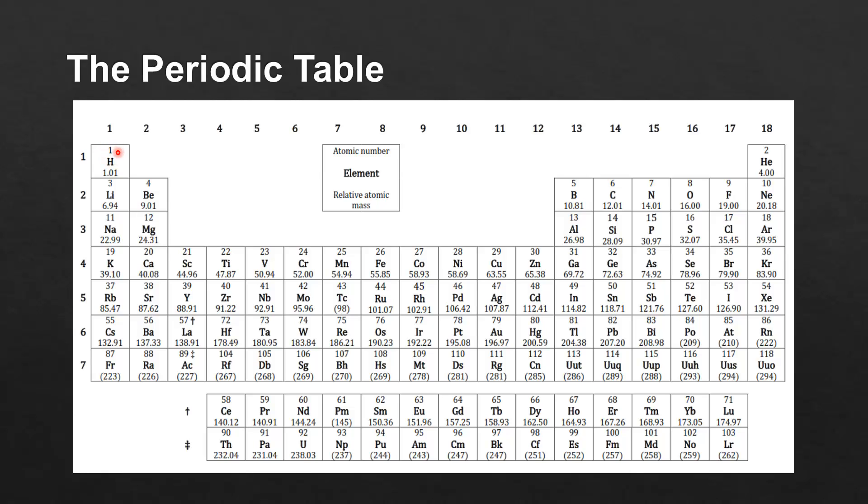So we start with atomic number 1, which is hydrogen, then we move to atomic number 2, which is helium, and then down to number 3, which is lithium, number 4 beryllium, number 5 boron, number 6 carbon, and so on.